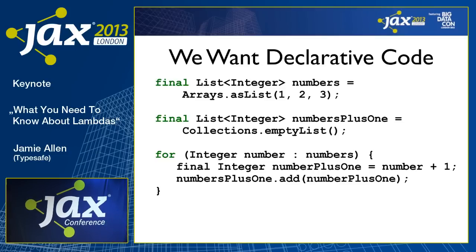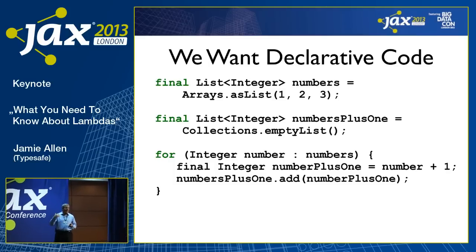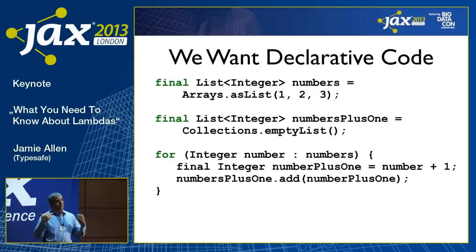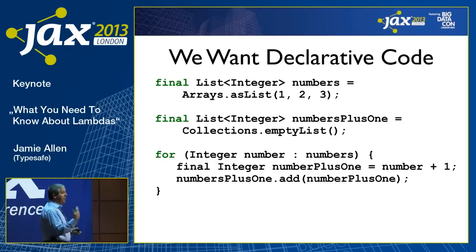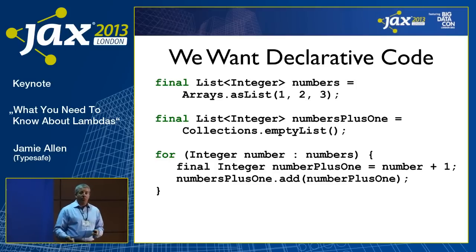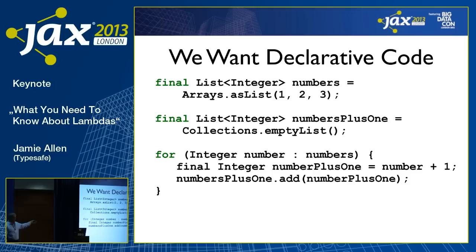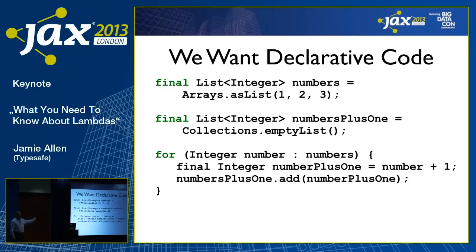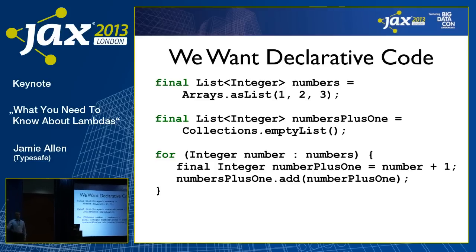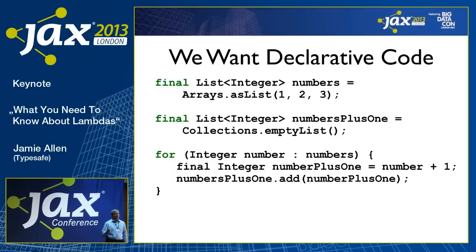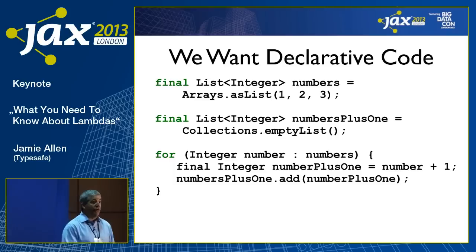We want declarative code. When we've been writing Java for all these years, we've been pre-defining the collection we're going to put our results into, then expressing how we're going to iterate through the data we want to manipulate, doing the manipulation, and then putting it back into that collection. In a simple example — creating a numbers list of one, two, three, creating a results list, then doing a for-iteration to add one to each value — this is not declarative. It's all about expressing how to get something done, cluttering our code with details not relevant to the business problem.